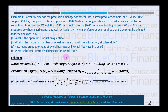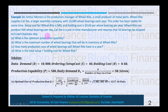The first important step in every question is to extract the data. Annual demand D is 10,000 wheel bearings per year. Setup cost S is $40. Holding cost H is $0.60. Production capability P is 500 units per day. Daily demand d₁ is given directly in the question as 50 bearings per day.